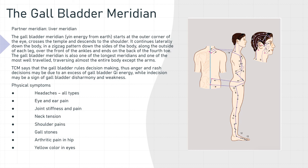The physical symptoms associated with gallbladder meridian imbalance are headaches of all types, eye and ear pain, joint stiffness and pain, neck tension, shoulder pains, gallstones, arthritic pain in the hip, and a yellow color in the eyes.